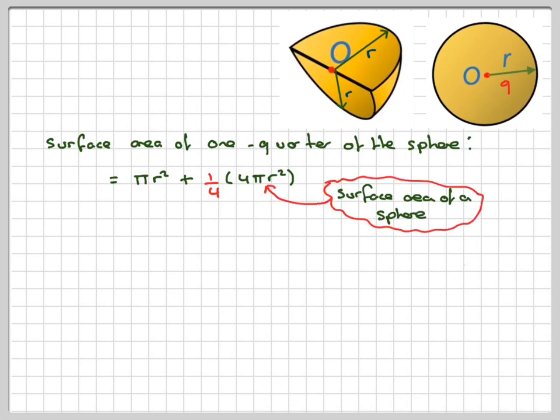Again, these fours will cancel. So what we notice is we've got πr² + πr², which makes two lots of πr². And we know that r is 9, so we've got 2π × 9², which gives me 162π.